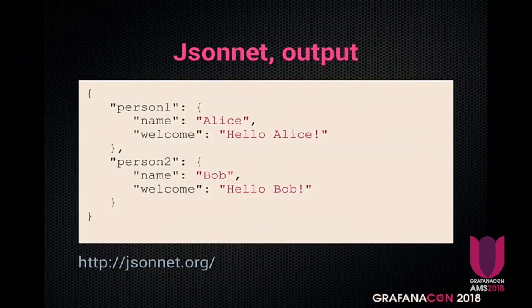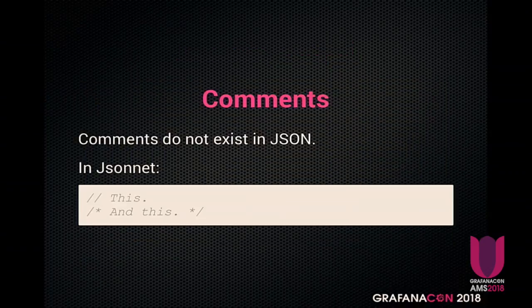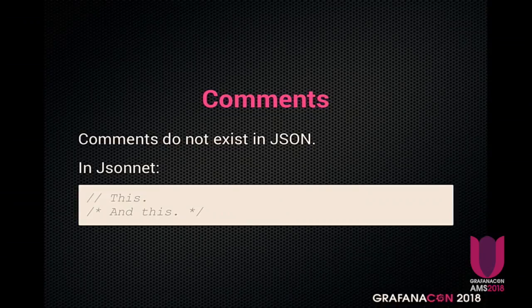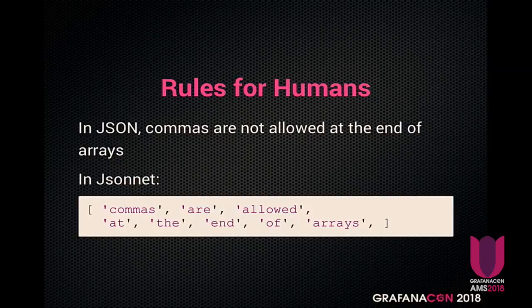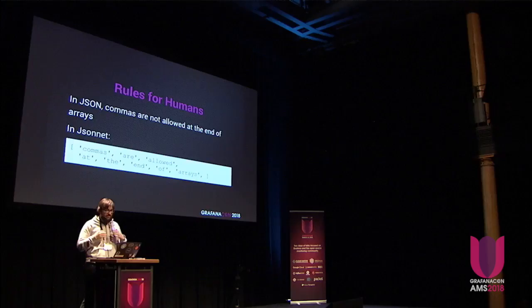JSONNET is not only variables — you also have comments. If you design big JSON files, you cannot use comments because that's not valid JSON. You can in YAML, but not in JSON. So JSONNET enables you to actually use comments, which is really great. It also enables you to put a comma at the end of an array. In JSON you cannot do that, and when you do diffs of big JSON files and want to add something at the end of an array, you get a noisy diff because of that trailing comma rule. JSONNET makes this much more natural.